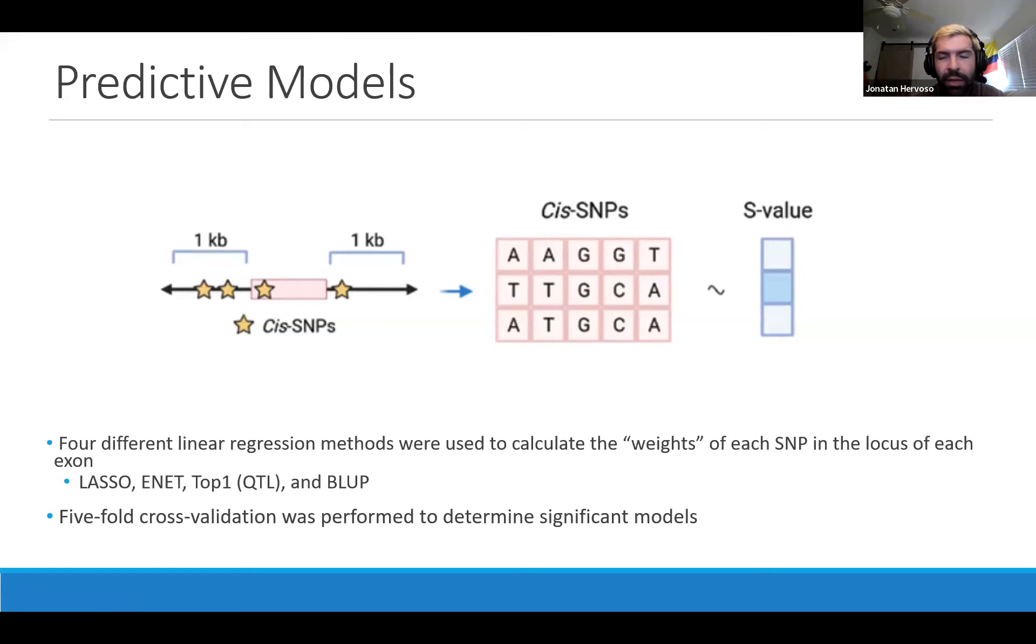The four different linear regression models we have used are LASSO, ENET, TOP1, which ends up being very equivalent to sQTL or eQTL because it only takes the most significant SNP, and BLUP, which is a Bayesian method and gives weights to all of the SNPs within the matrix. We then perform a five-fold cross-validation to determine significant models to be used moving forward.